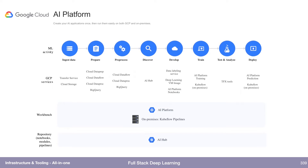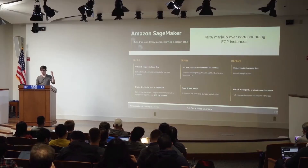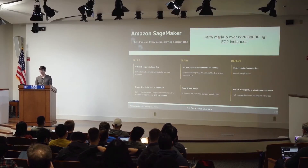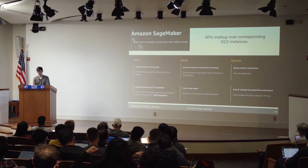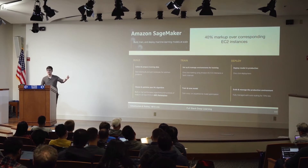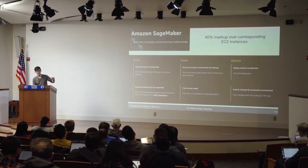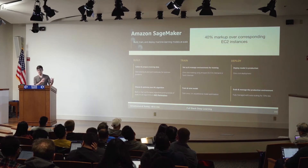SageMaker is another all-in-one solution that promises to help you with collecting data, maybe even labeling it, storing it, choosing the machine learning model, training at scale, having managed environments, and then deploying a model in production with one click and monitoring it. The catch is a 40% markup over corresponding EC2 instances. For example, a K80 GPU instance that costs one dollar on AWS will cost you $1.40 through SageMaker.